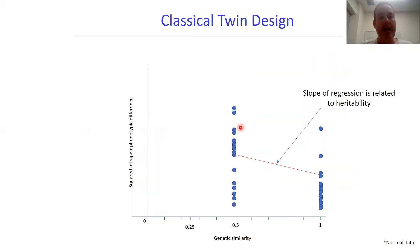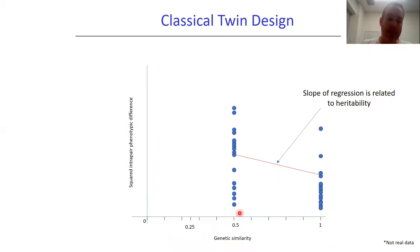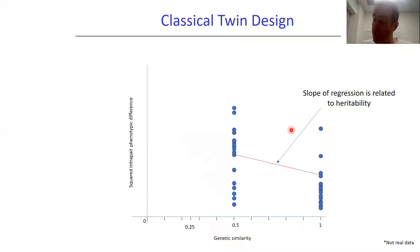If you contrast that with what goes on in the classical twin design — comparing the similarity between MZ twins with the similarity between DZ twins — if we were to plot twin pairs on this scatter plot, all the MZ twins would be sitting up at one, meaning they have a genetic similarity of one. Whereas DZ twins would sit at 0.5 because on average they share half their alleles identical by descent. You could fit a regression line here, and again the slope of this regression would be related to trait heritability — not the SNP heritability, but the narrow sense heritability, which is all the additive genetic variance over the phenotypic variance.